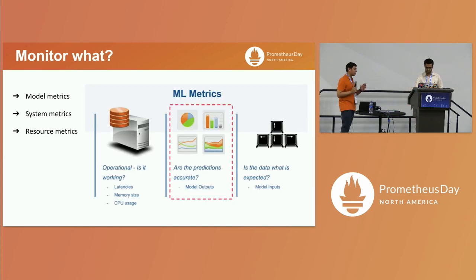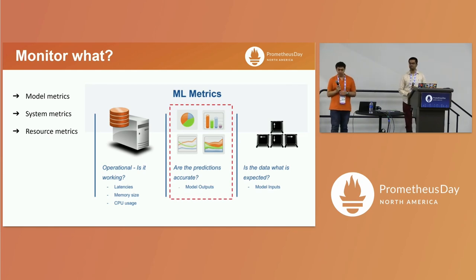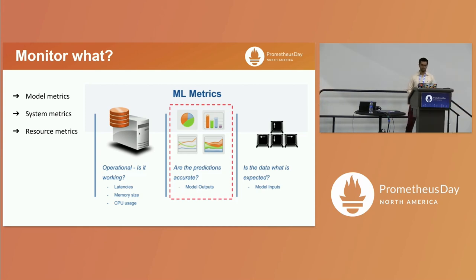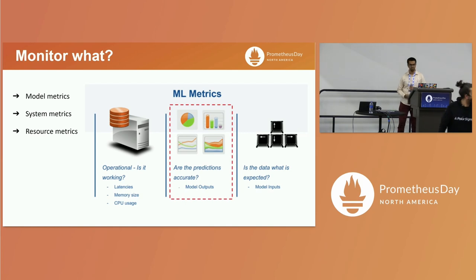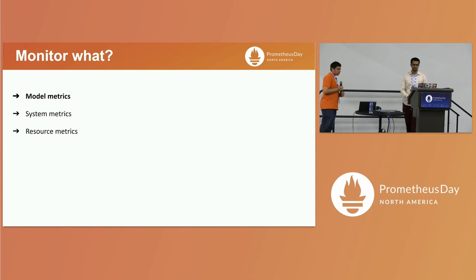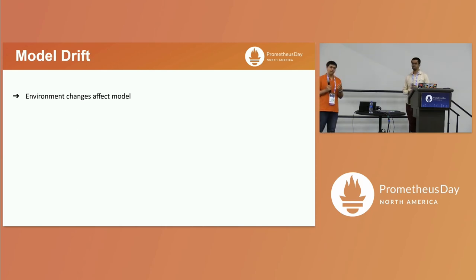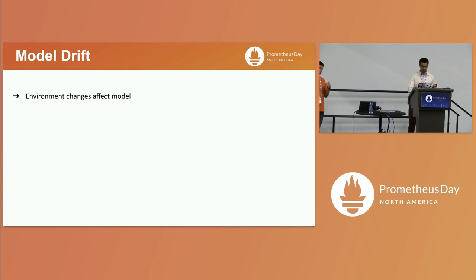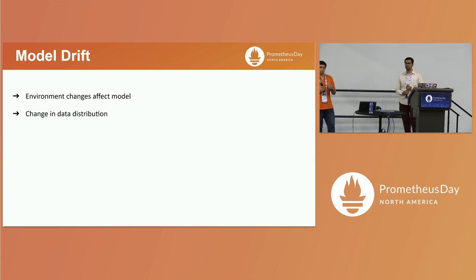What we want to do is not just monitor system metrics and resource metrics, which we already do. We introduce a third term called model metrics — trying to figure out all of this. The model is still giving you predictions, there is no error, but you have to make monitoring work by getting the model metrics. In this presentation, we'll be stressing specifically on the model metrics part, since system and resource metrics have been covered elsewhere.